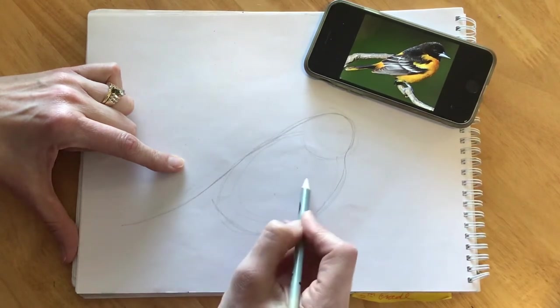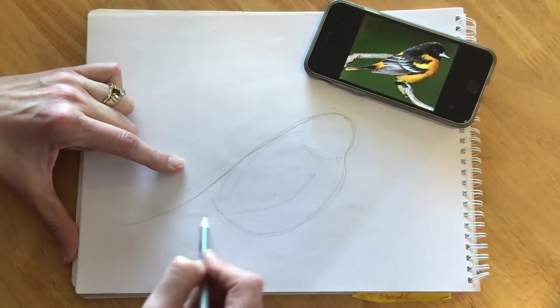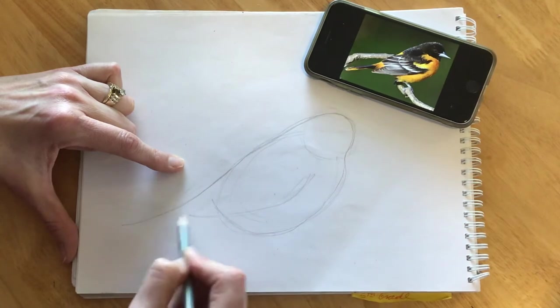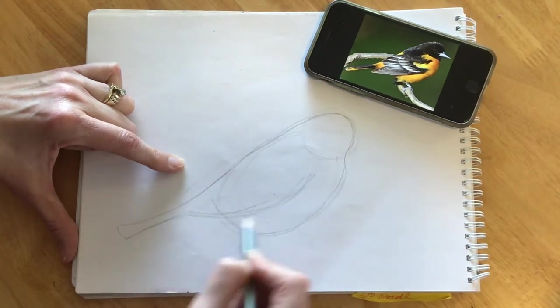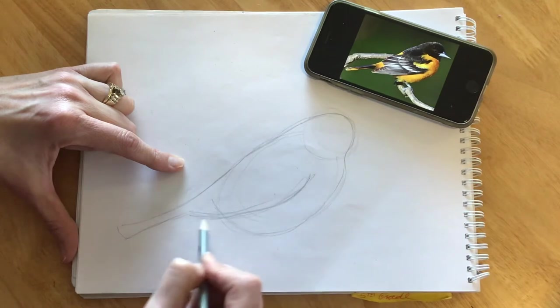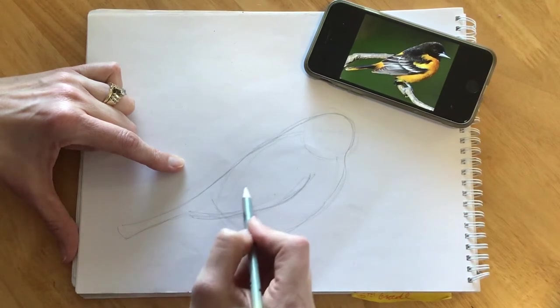This comes up and then this big wing is covering up quite a bit of it here where the tail and the body come together comes down.